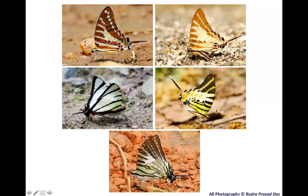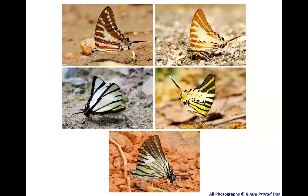Three swordtail species — the Four-Bar Swordtail, Five-Bar Swordtail, and Six-Bar Swordtail — can all be seen in the northern part of West Bengal. The first two are seen at lower altitudes, but the Six-Bar Swordtail is found at somewhat higher altitudes, around 3,000 feet, and has been seen in Neora Valley and other forest areas.